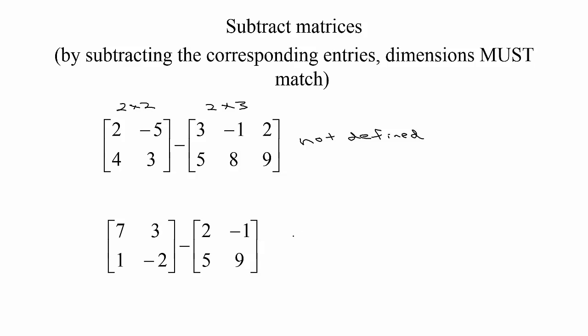This pair works: we have a 2 by 2 minus a 2 by 2. To subtract two matrices, just subtract the corresponding entries. 7 minus 2 would be 5, 3 minus negative 1 would be 4, 1 minus 5 would be negative 4, and negative 2 minus 9 would be negative 11. Pretty simple—just subtract corresponding entries.